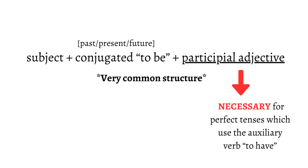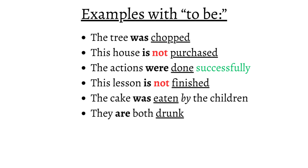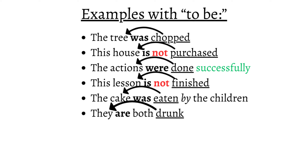Their form is also necessary for perfect tenses, which use the auxiliary verb "to have". Some examples that only use "to be" are: "The tree was chopped." "This house is not purchased." "The actions were done successfully." "This lesson is not finished." "The cake was eaten by the children." "They are both drunk." Each phrase has a subject, a conjugated verb "to be", and a participial adjective that acts upon the subject. We can tell all of these are adjectives because they come from verbs, and even though some end in "-ed", others have different forms that still act as adjectives.